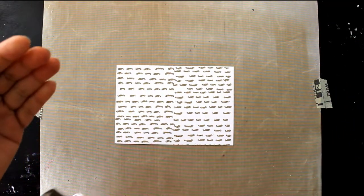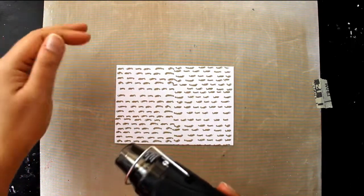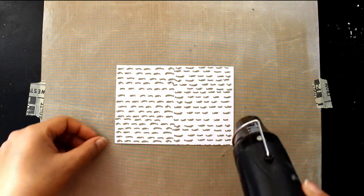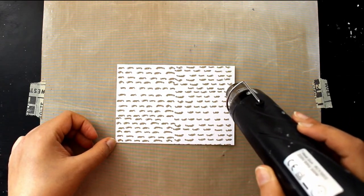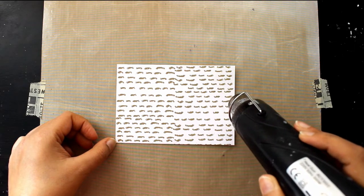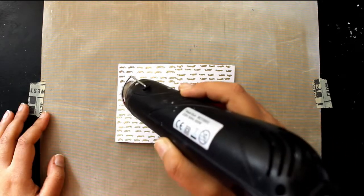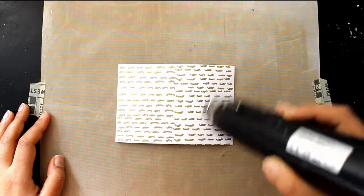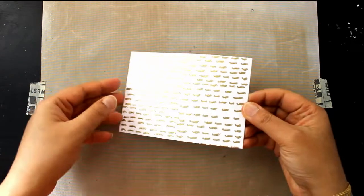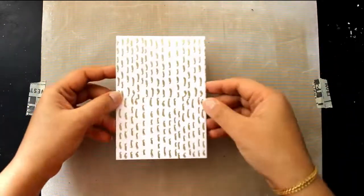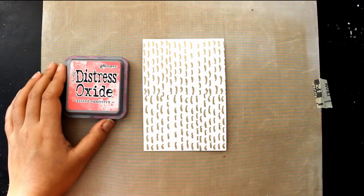Before I take my heat gun to my paper, I always let it warm up for a couple of seconds because that will ensure that the powder melts rather than blows away off your paper. Gold embossing powder is one of my most favorite embossing powders to use on my projects. This is another thing that makes me smile.